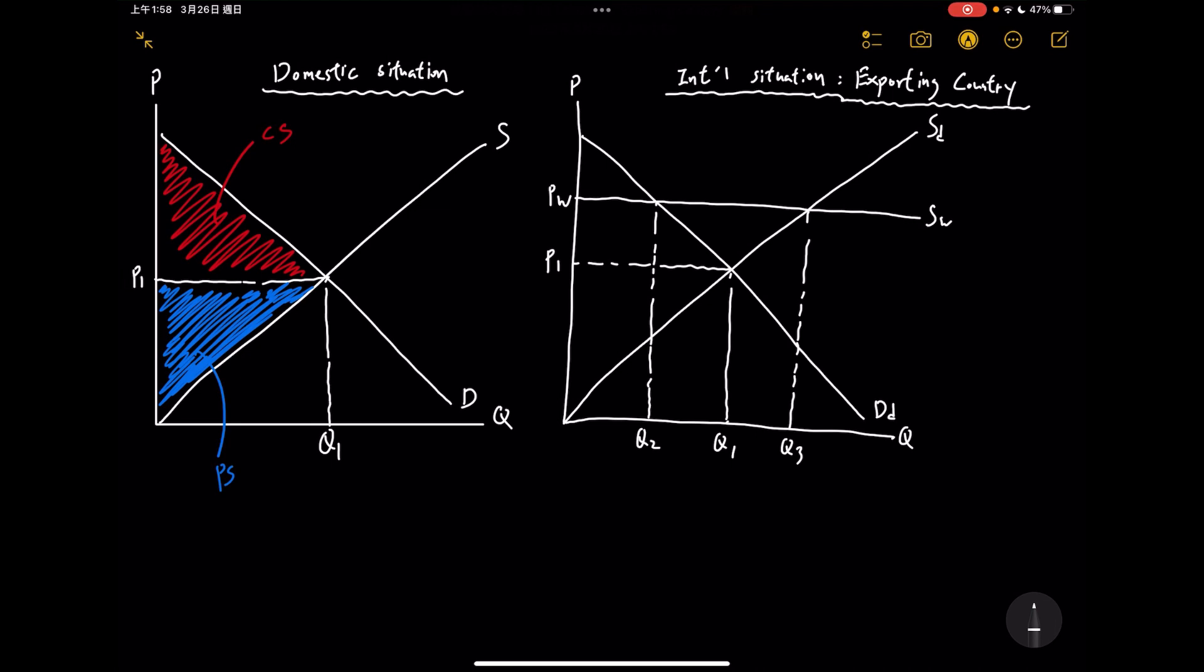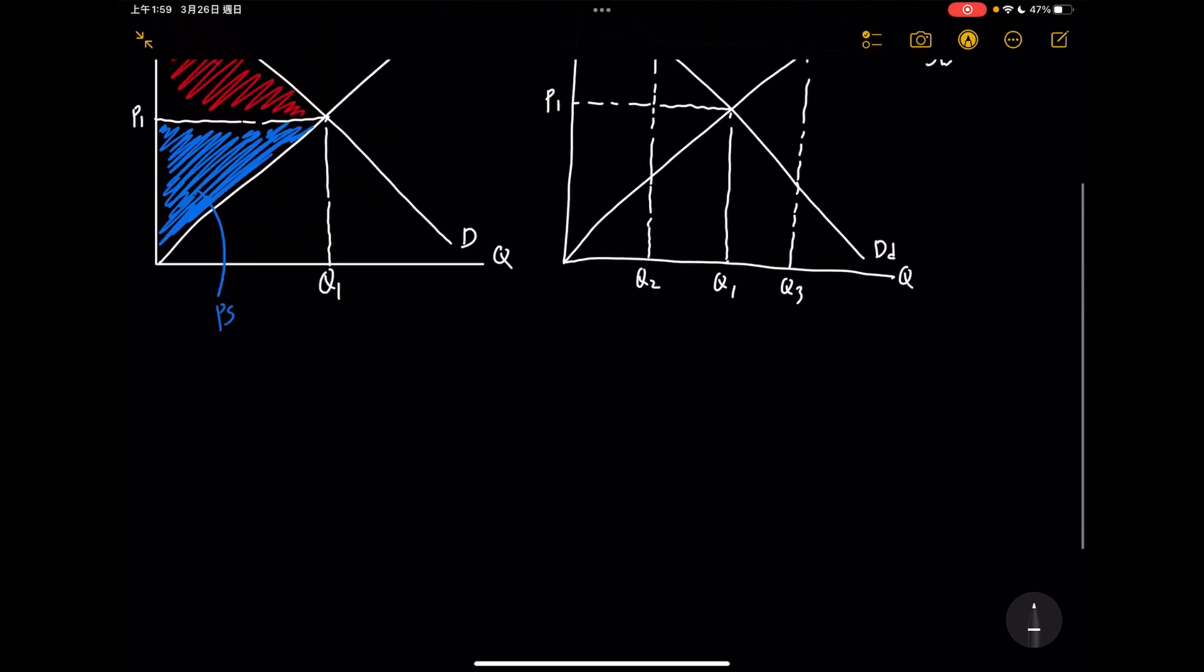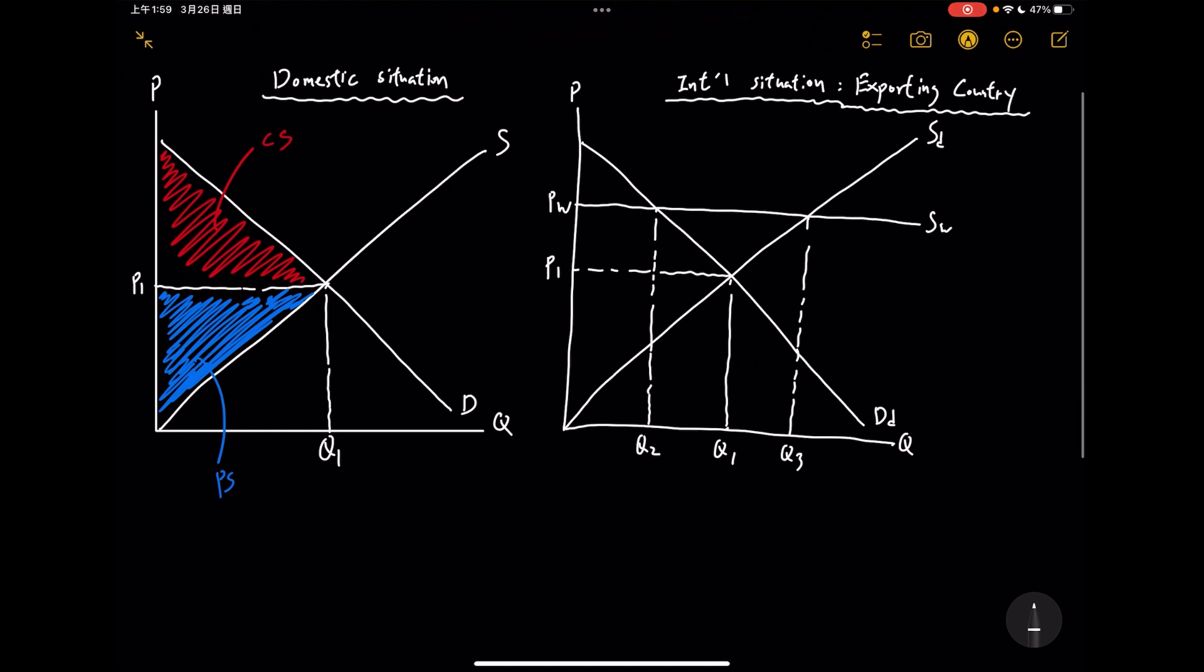But when we open the door to the world and now we're trading with other countries, you will find something a bit different. Let's take a look at the diagram on the right. We are able to see that our domestic price or market price when we are making this certain good is basically P1.